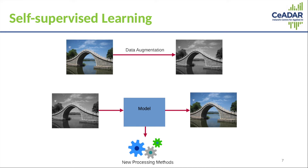So in this example you would take an image, convert it to black and white, and then train a model to convert it from black and white back into color. The idea is that in this process you would learn certain things about the data which would allow you to improve the performance of downstream tasks such as image classification.